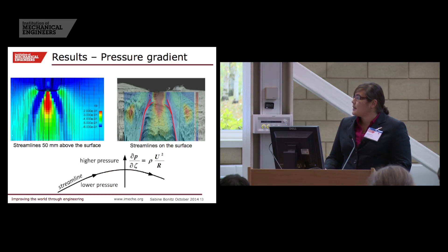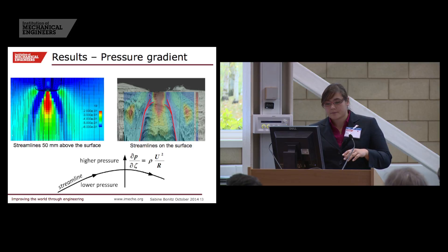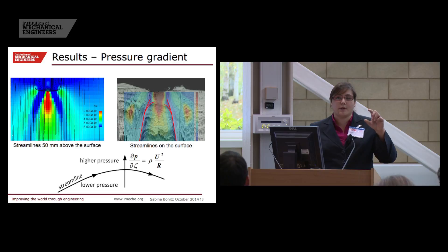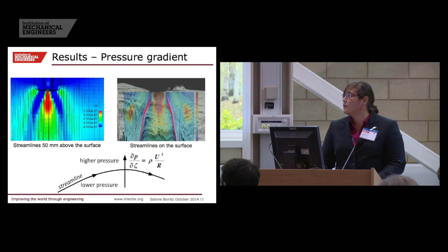But what happens with the streamlines on their way to the surface? And here, this is a picture where I plotted the streamlines, 50 millimeters above the surface, and we see that the streamlines are well aligned with the main flow, and straight. And when we look onto the streamline pattern on the surface, we saw that we have these merging streamlines here. I'll try to visualize a little bit better with the red lines. And we find that this convergence of the streamline exactly matches with the location of the pressure minimum in the pressure distribution.